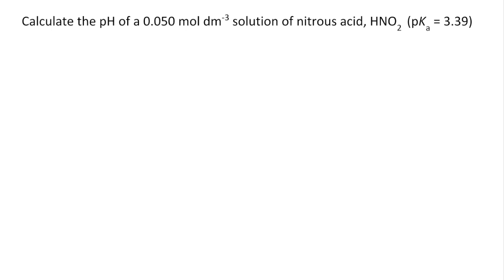So here's a quick calculation we can try. I've thrown in an extra step just to practice one other thing. So we've got to calculate the pH of 0.05 moles per decimeter cubed nitrous acid and we're given the pKa of 3.39.